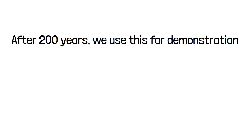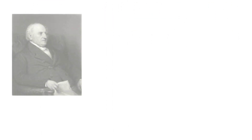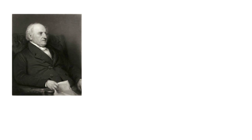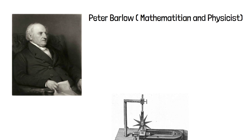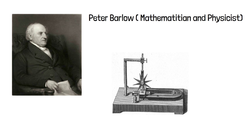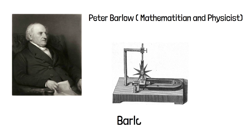Later, Peter Barlow, an English mathematician and physicist, invented a spinning wheel famous as Barlow's wheel. This was an early refinement of Faraday's experiment. Despite all these inventions, till 1830 there was no electric motor capable of rotating mechanical parts.